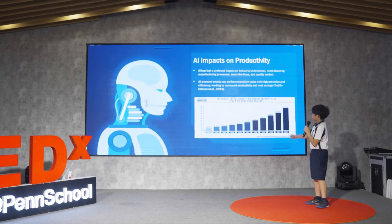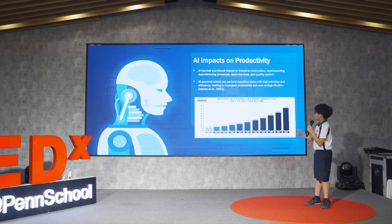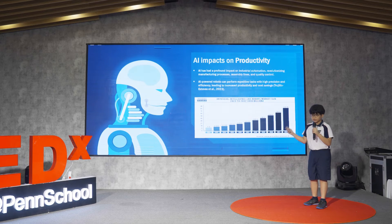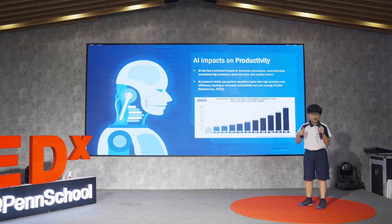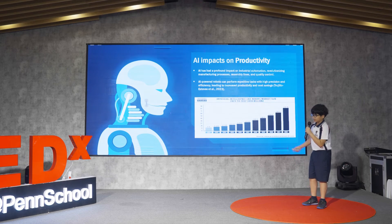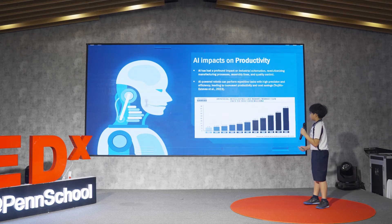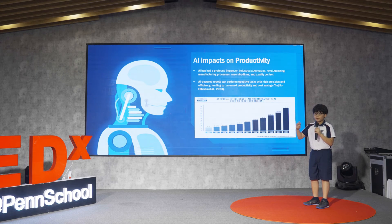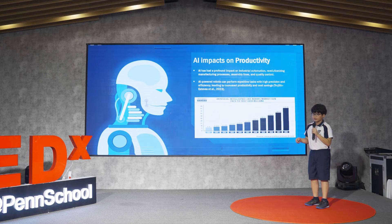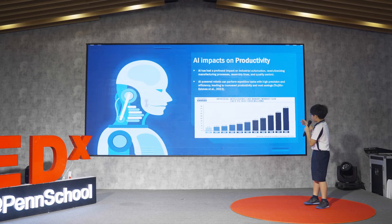AI also has a profound impact on productivity, especially industrial automation. Back then, almost nothing was automated — humans had to do everything, and since humans have limits, they need to rest or eat. With AI, there are no such limitations; it can perform automation tasks repetitively, quickly, and accurately. AI-powered robots can perform repetitive tasks with high accuracy because people have invested heavily in data training to ensure AI works well and retains all the data.